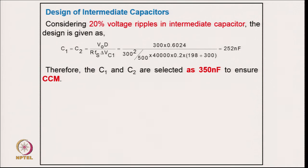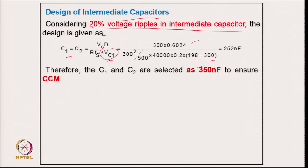For the intermediate capacitors C1 and C2 for both positive and negative half-cycle converters: considering 20 percent voltage ripple, the capacitors are calculated from the relation for the given ripple, where the voltage across the capacitor is the sum of input and output voltage. Putting in all values gives 252 nF. A slightly higher value of 350 nF is selected to ensure continuous voltage across the capacitors.